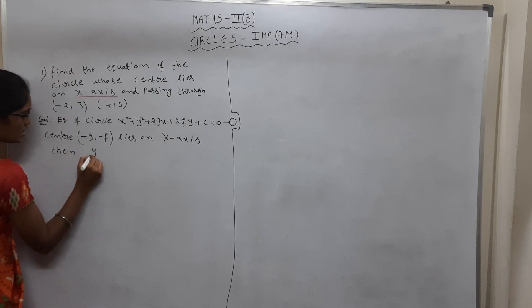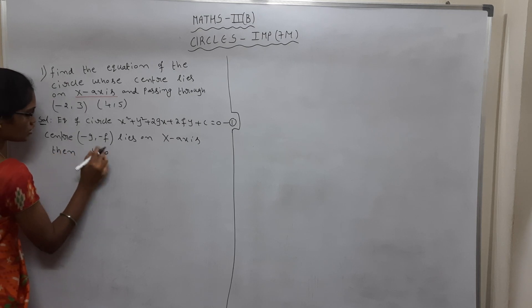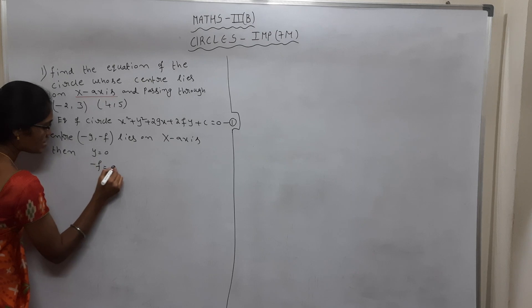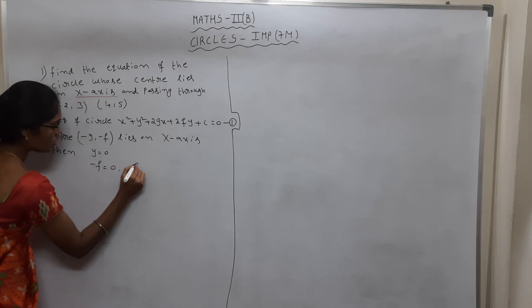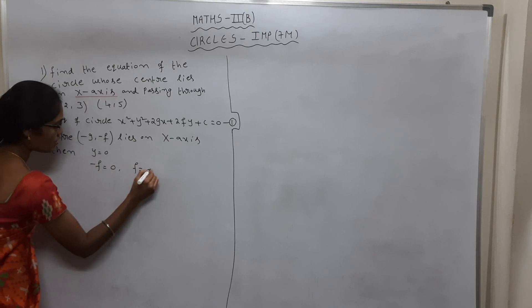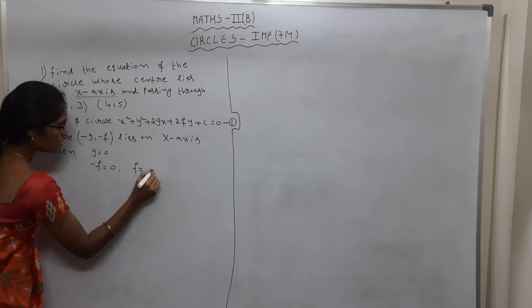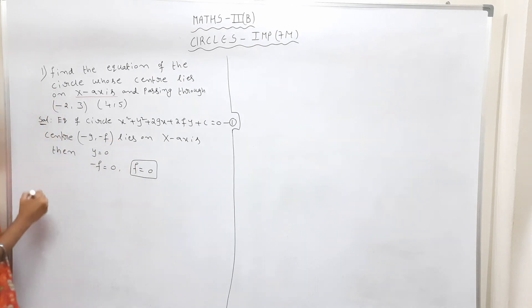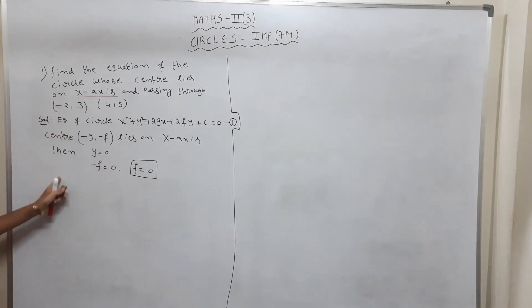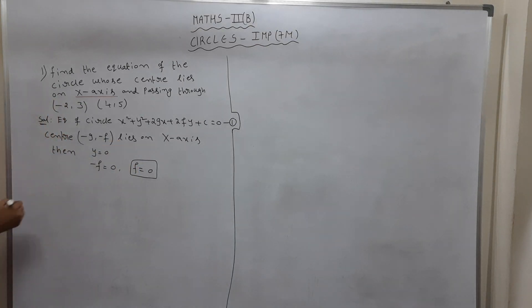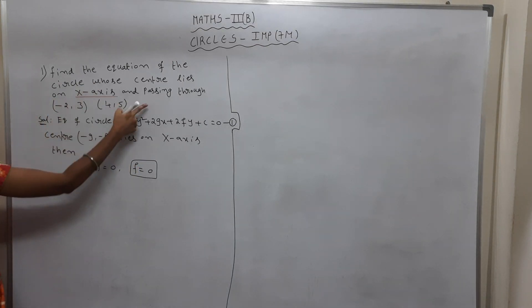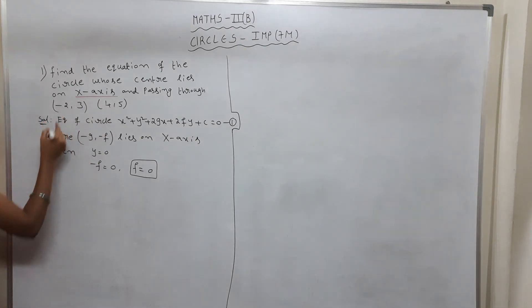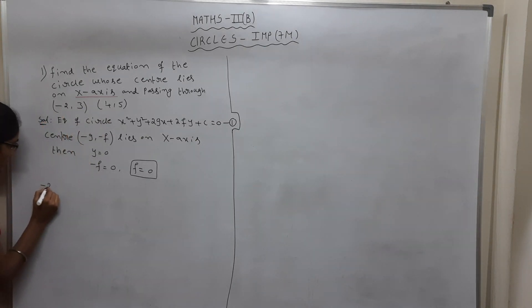Since the center lies on the x-axis, y = 0, therefore -f = 0, so f = 0. Now take the first point: (-2, 3).